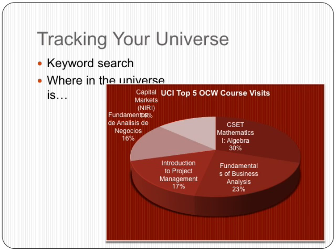What you want to do is set up a spreadsheet that lists your courses, the keyword searches you're doing to find each course, and how well you're showing up in the search results. By doing this, you give yourself an objective measure of the visibility of your project, and you can build this up relatively rapidly. Remember that the OpenCourseWare Consortium is itself a network of authoritative university websites that point to each other, so membership in the Consortium is yet another way to expand your universe.